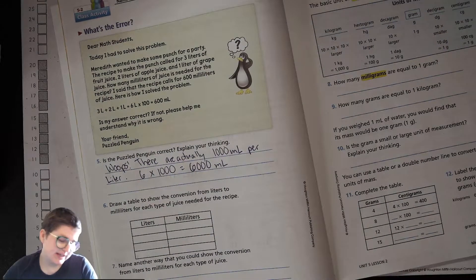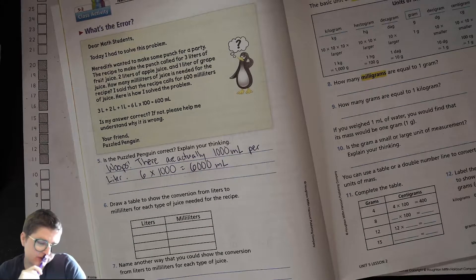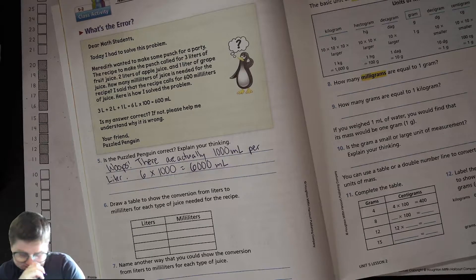That's it. Simple mistake. Okay, now it says draw a table to show the conversion from liters to milliliters for each type of juice needed.